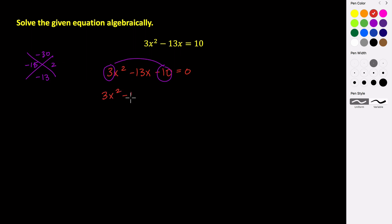So now we rewrite this equation up here using those two numbers. So 3x squared minus 15x plus 2x minus 10 equals 0. So this is just this exact same equation, only rewriting this middle term using these two numbers. Because negative 15x plus 2x is negative 13x.